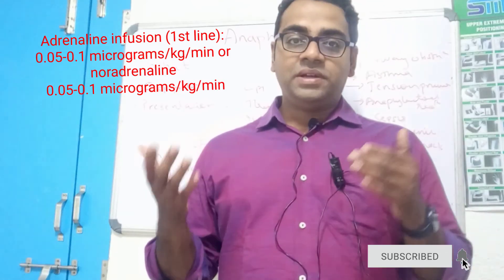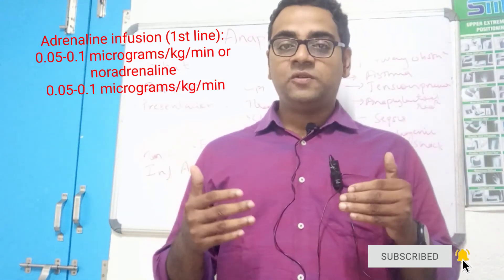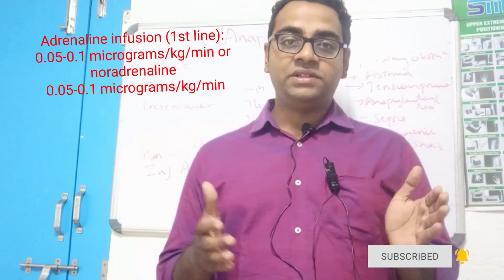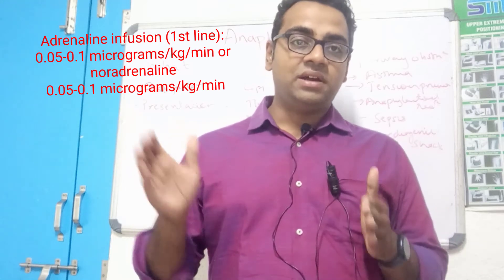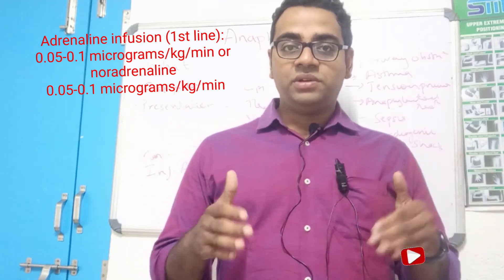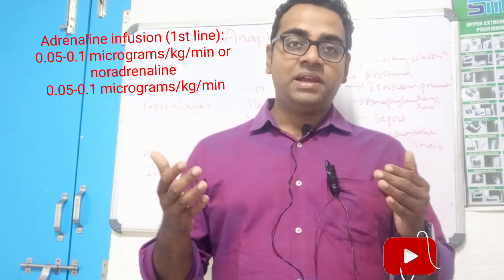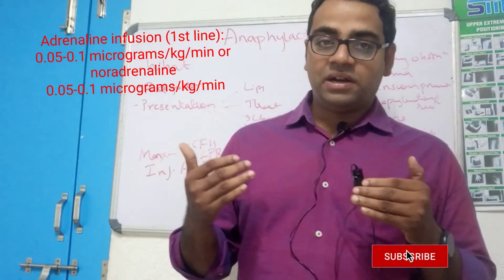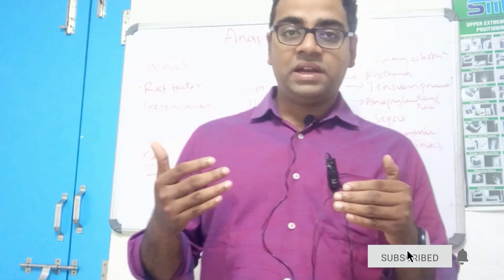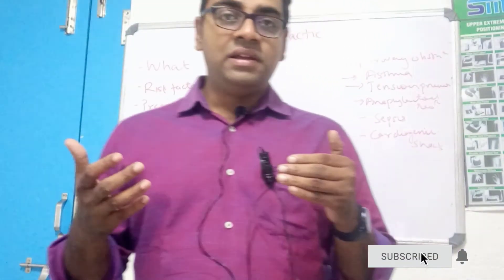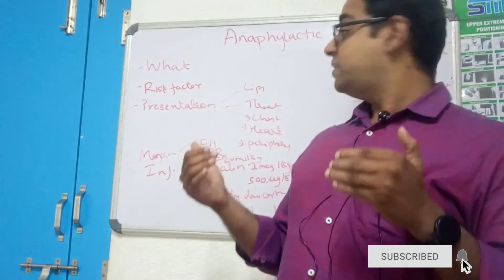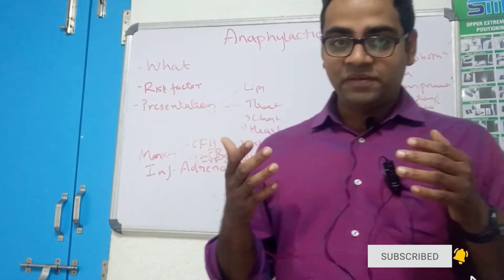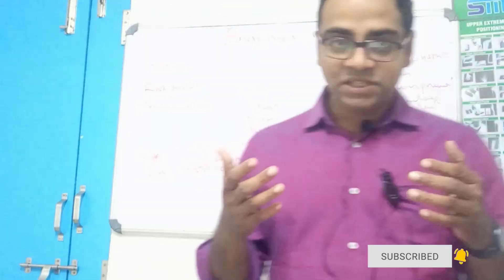If the patient recovers, we have to follow him once he is out of danger. We should start medicines to maintain his blood pressure, such as noradrenaline or adrenaline infusion. We should start glucocorticoids and continue to follow the patient. While doing this, we should also keep a few differential diagnoses in mind.